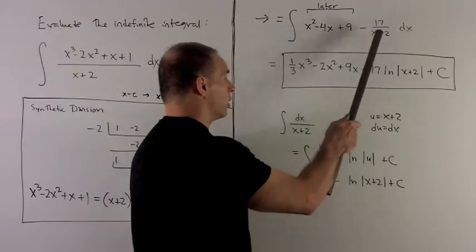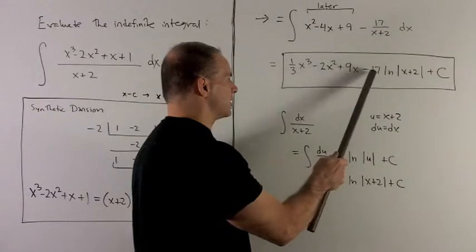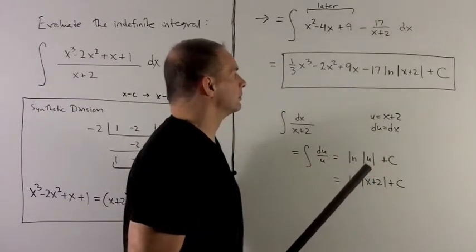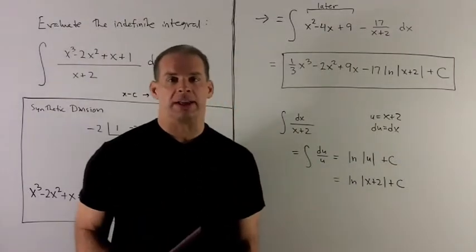Put that back into the original, and so we just have minus 17 natural log of absolute value of x plus 2 plus a constant. So, that's my indefinite integral.